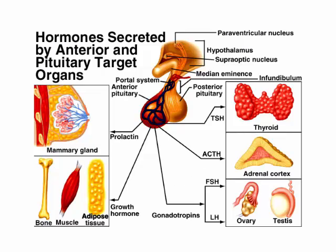Those are the two posterior pituitary hormones. The anterior pituitary makes six that we need to know. First, prolactin — 'lact' comes from lactose, which is milk sugar. Prolactin signals the production of milk in the mammary glands.